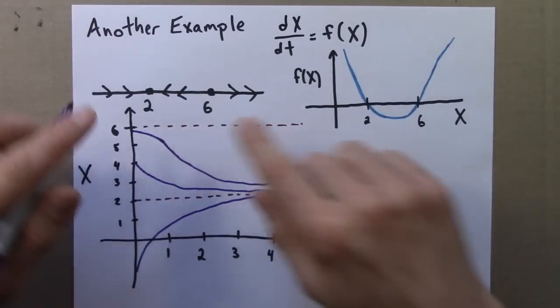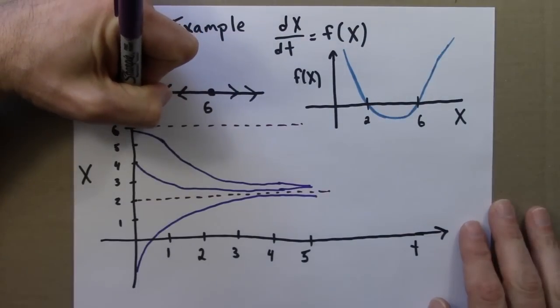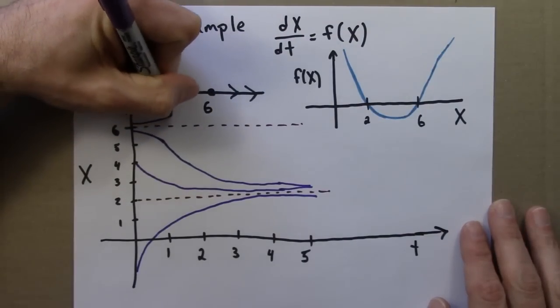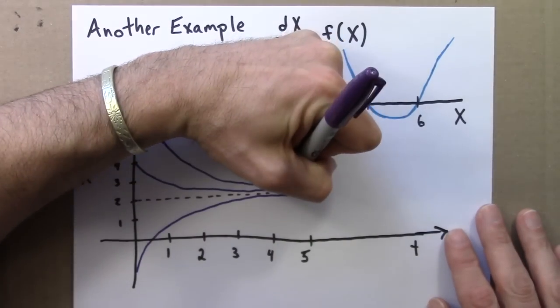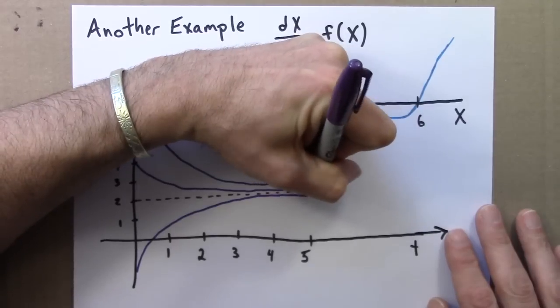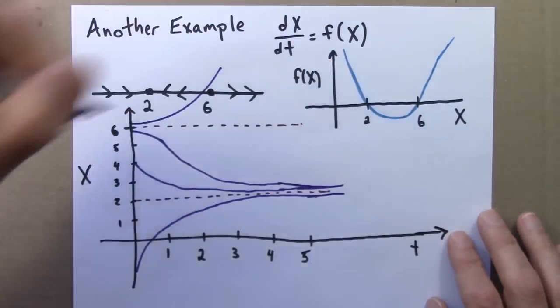We have an equilibrium point at 6. The equilibrium point here is unstable. The points here would get pushed away. These are all converging to 2.